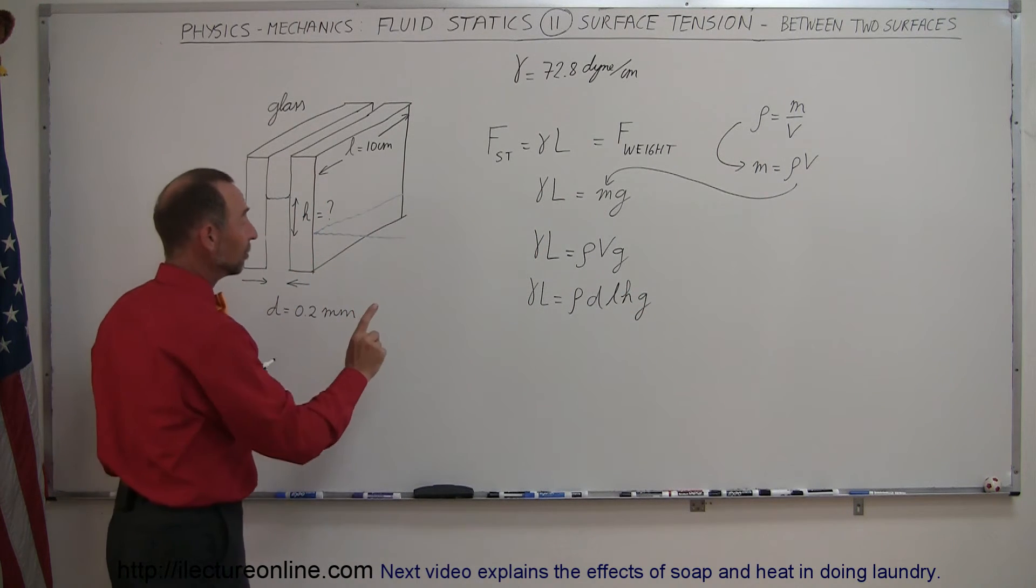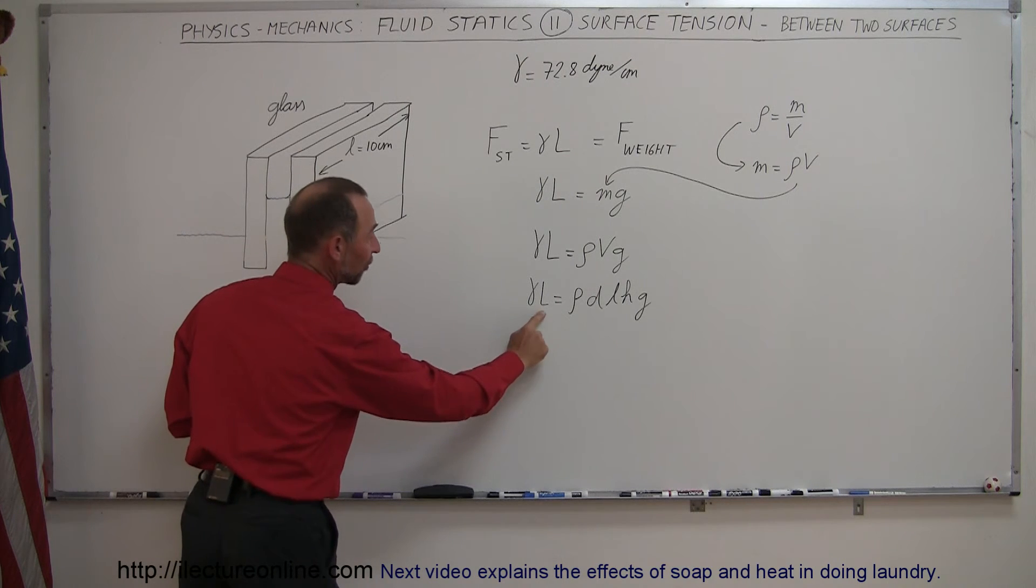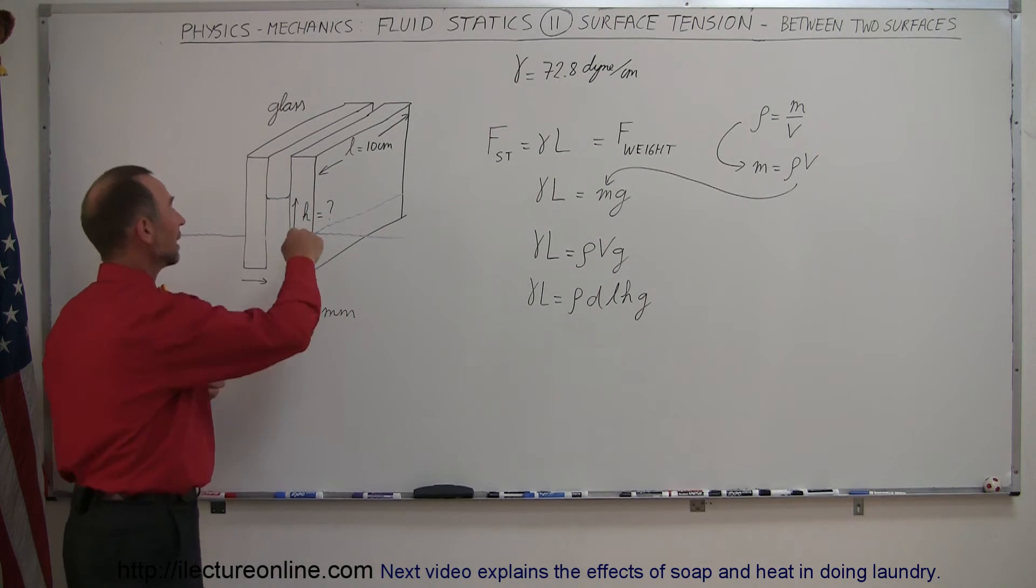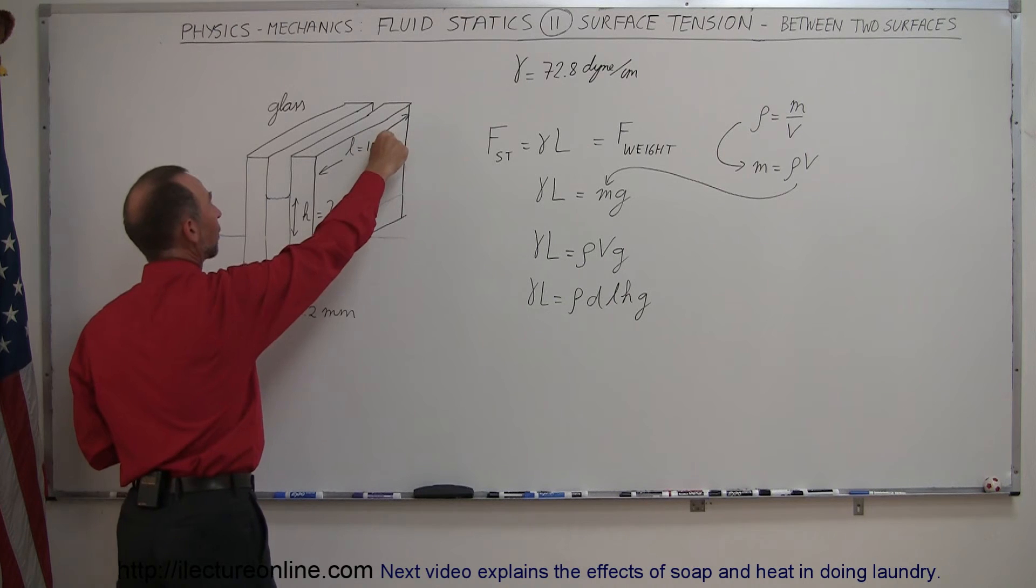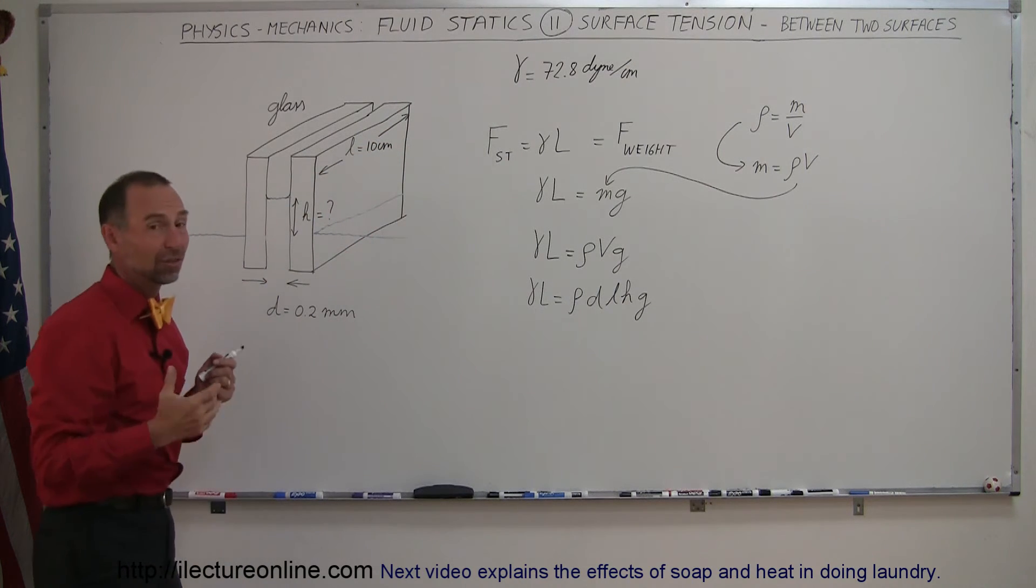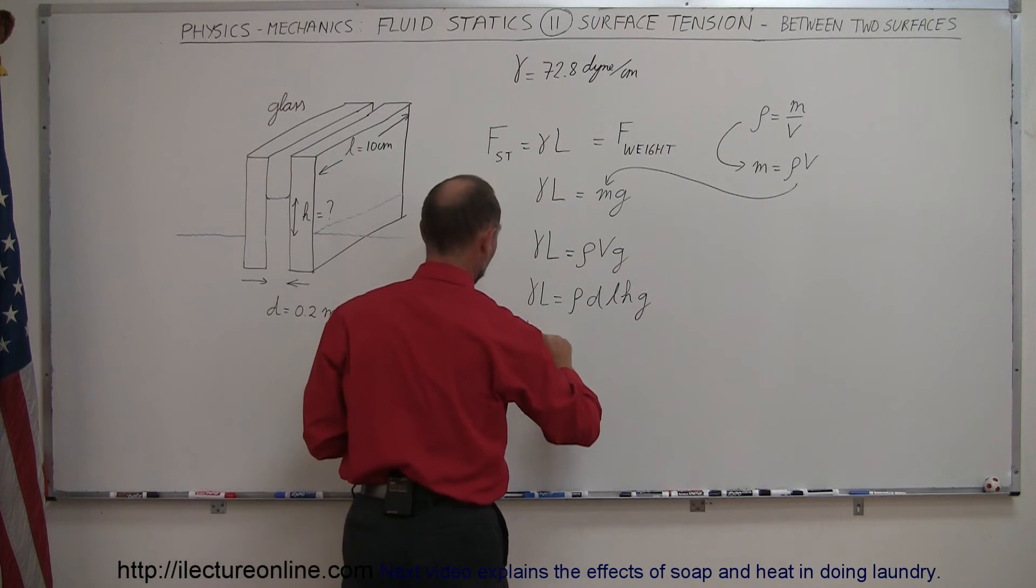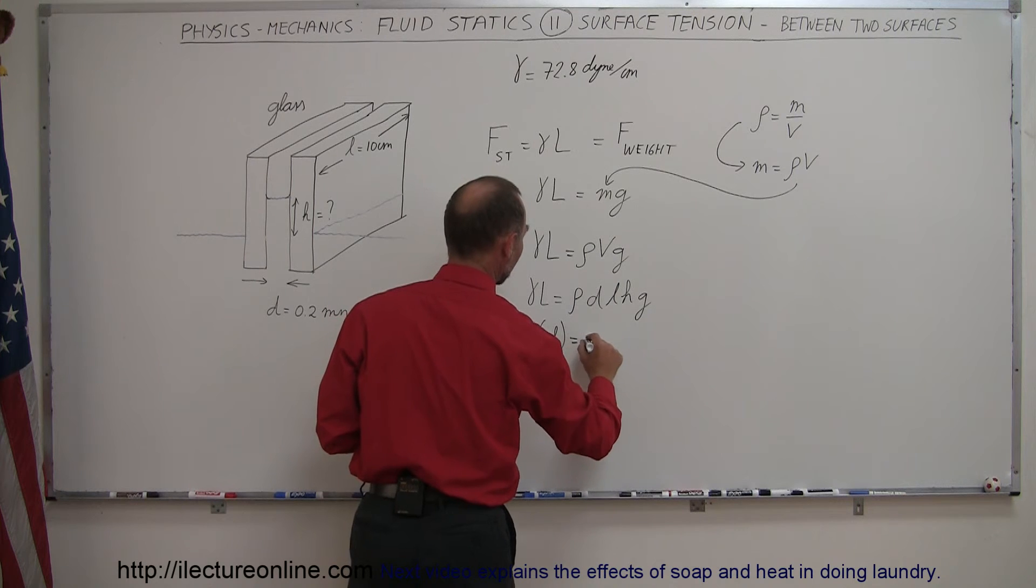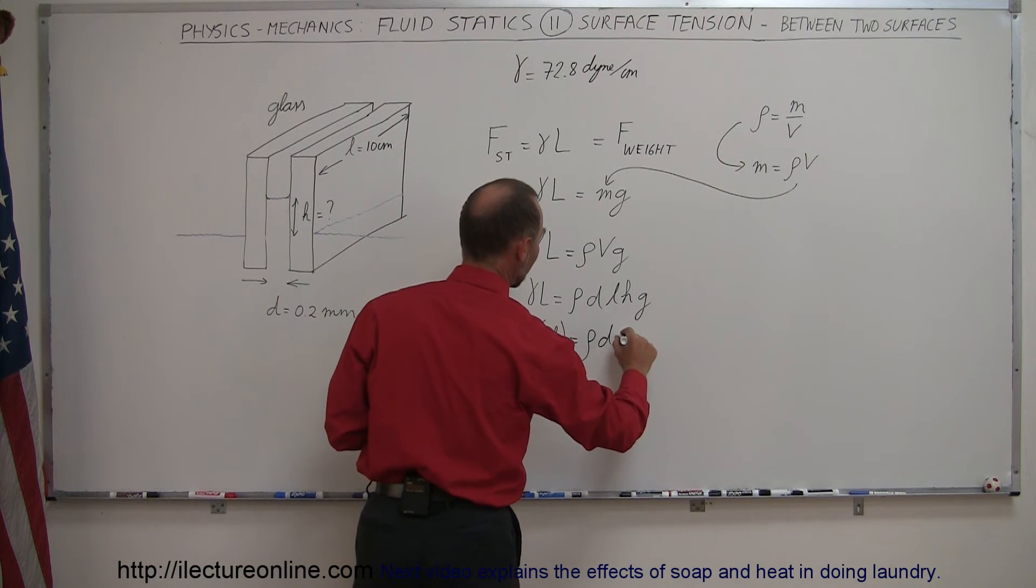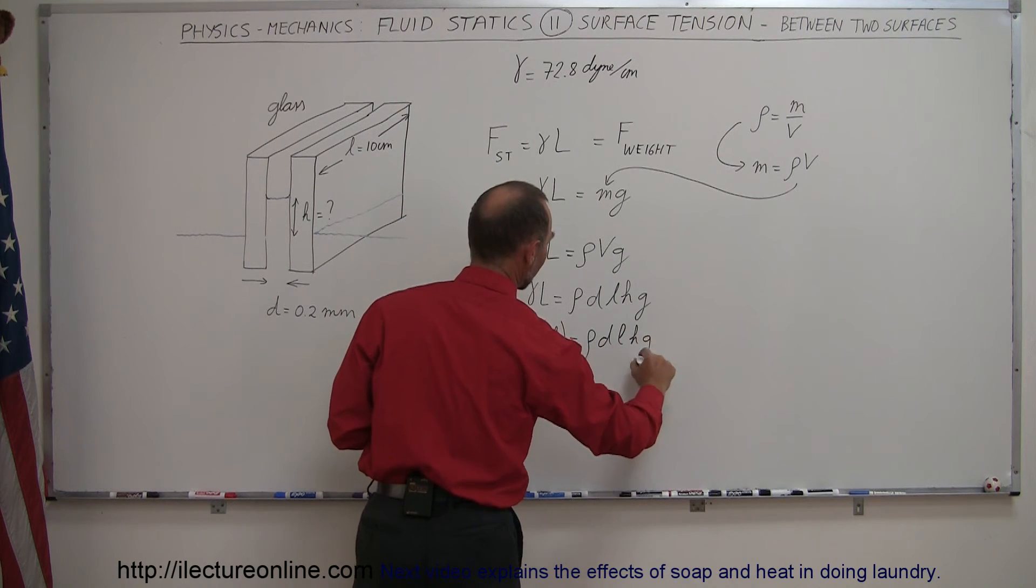The length along which the surface tension acts would be one side of one slab plus one side of the other slab, which is length plus length, or twice the length of each slab. So the coefficient of surface tension times 2l equals the density times d times l times h times g.